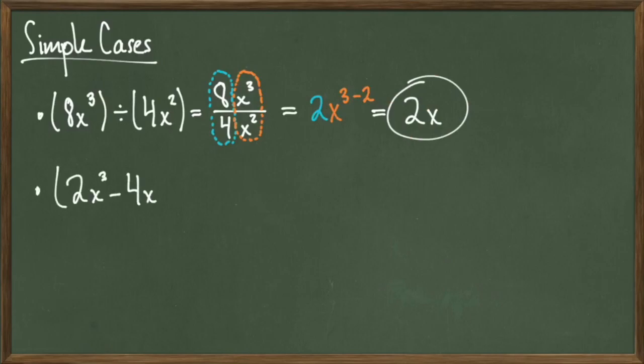This next example is a little bit more interesting, but uses virtually the same steps. Consider 2x cubed minus 4x divided by the polynomial 2x squared. Again, we have that 2x squared is not the zero polynomial, so this division is valid. Again, set it up as a fraction.